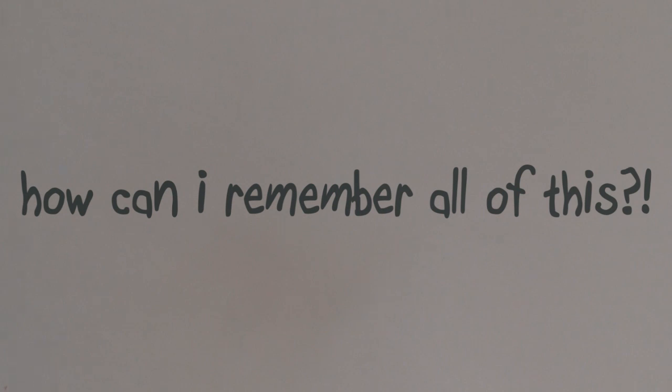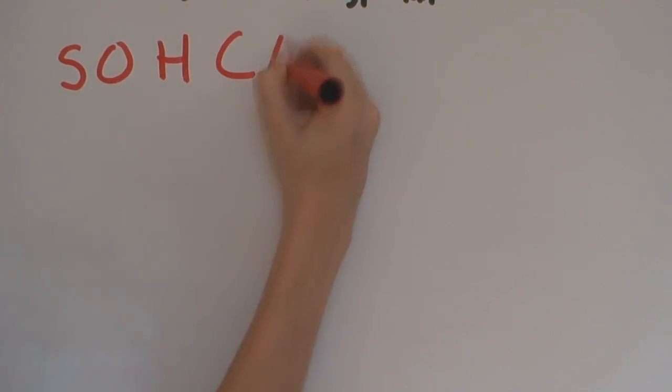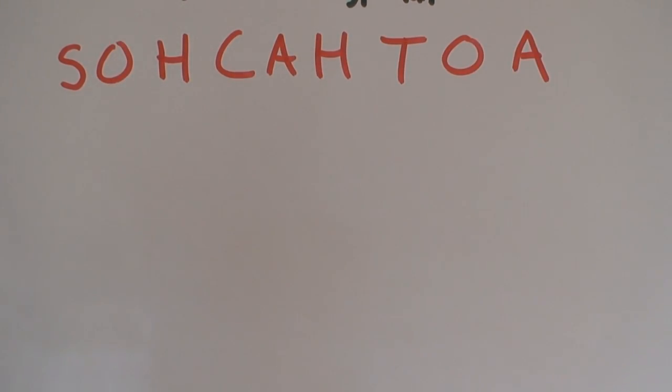Now, you may be wondering, how in the world am I going to remember which function goes with which side types, and what are their orders in the equations? Well, there's a simple way to remember this. It's called SOHCAHTOA. That's an easy way to remember the terms.